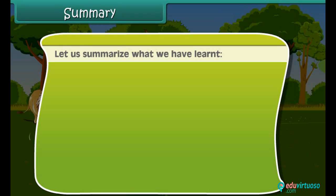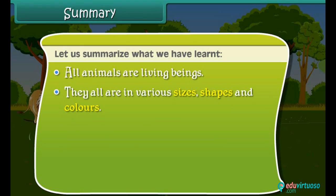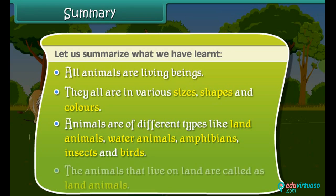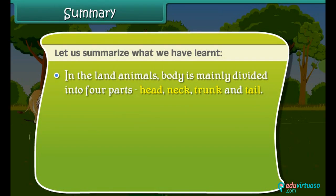Now let us summarize what we have learned. All animals are living beings in various sizes, shapes and colors. Animals are of different types: land animals, water animals, amphibians, insects and birds. The animals that live on land are called land animals.